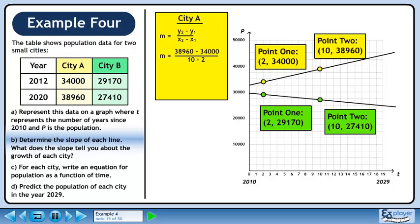Plug in the values of each point into the slope formula. Simplify the fraction. The slope is 620 people per year.